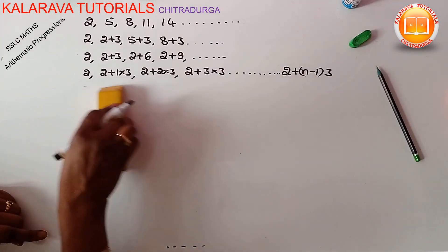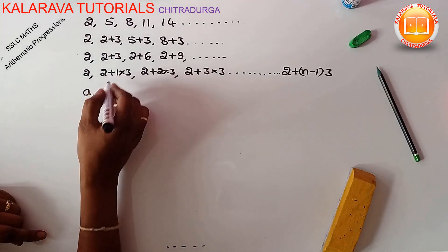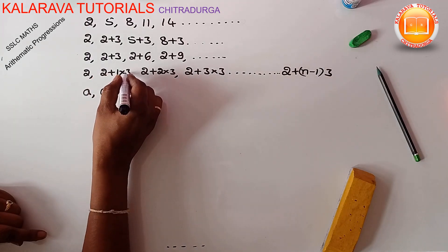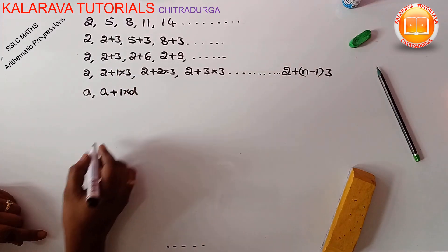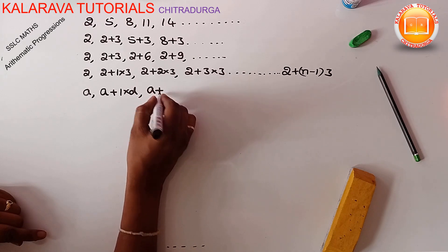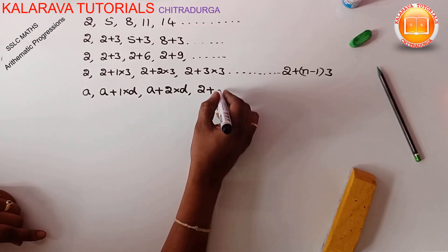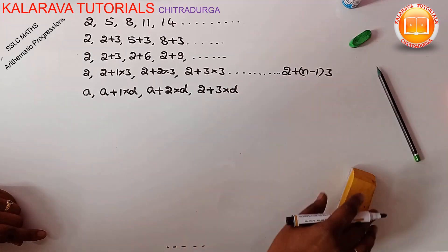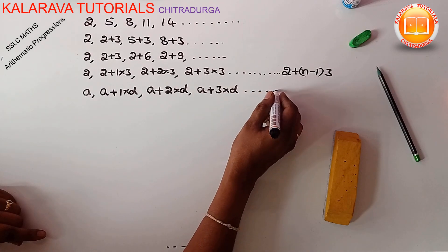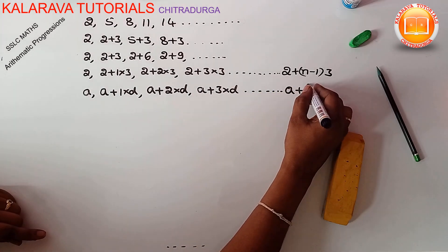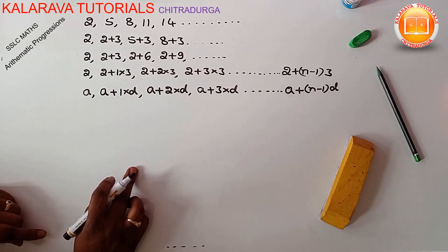We can now write the general formula. Taking the first term as 'a' and the fixed number as 'd': the second term is a plus 1·d, the third term is a plus 2·d, the fourth term is a plus 3·d, and at last the nth term is a plus (n minus 1) times d. This is the nth term of the arithmetic progression.